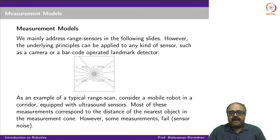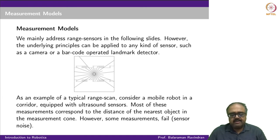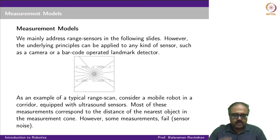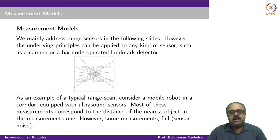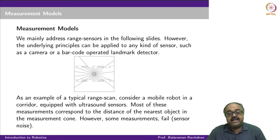Welcome to the final lecture of week 11. In this lecture, we look at the last component we need for making our state estimation models work, which is essentially the measurement model. The measurement model tells you what is the probability of Zt given Xt, or given Xt comma m if you are using a map.